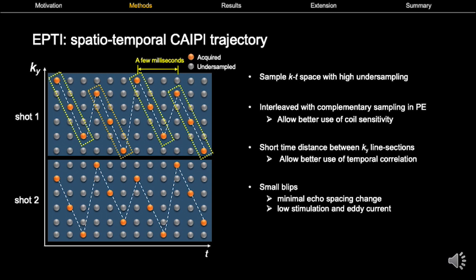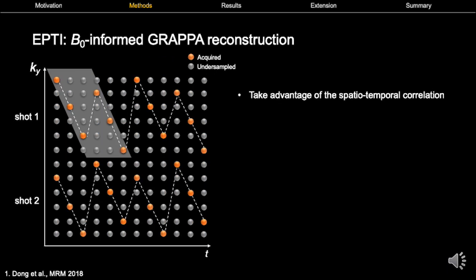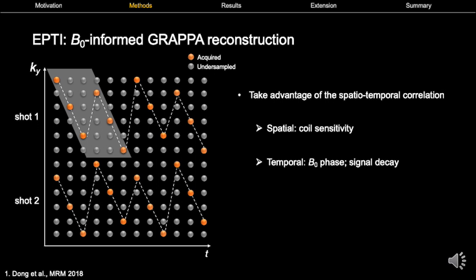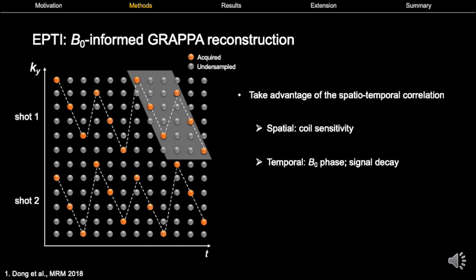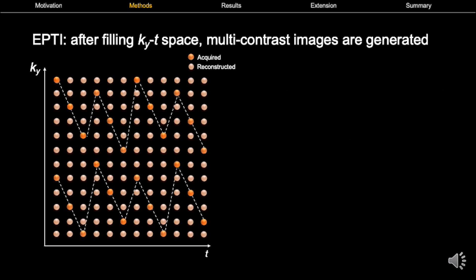They are also close in time for only a few milliseconds, so they have high temporal correlation. Only small blips are needed to implement the sampling trajectory, therefore inducing minimal echo spacing change and added current. It is also robust to shot-to-shot B0 variations. A B0-informed GRAPPA reconstruction previously developed will be performed to interpolate the missing data points. The kernel takes advantage of spatial and temporal correlation using both coil sensitivity and temporal B0 phase information.